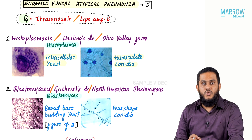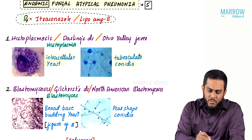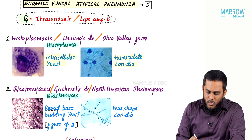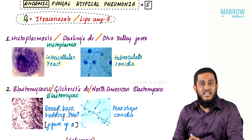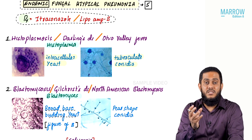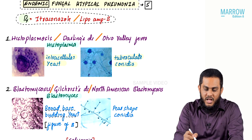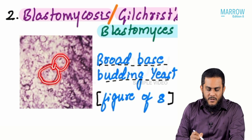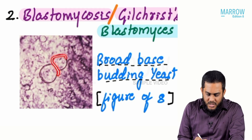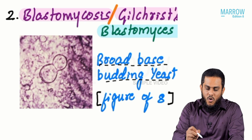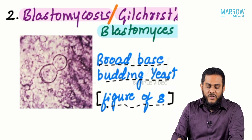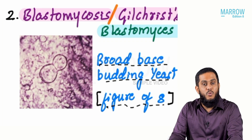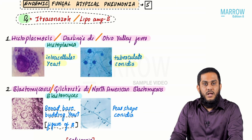The yeast form of Blastomyces is identified by broad-base budding yeast cells. The base of the budding is very broad. Some consider it to look like the number eight, called a 'figure of eight' appearance. Broad-base budding yeast cells or figure of eight appearance = yeast form of Blastomyces.